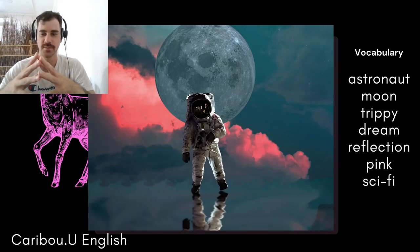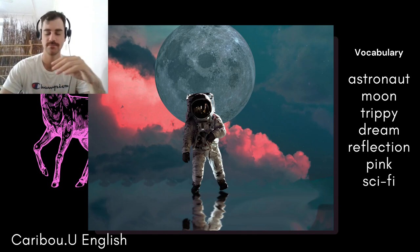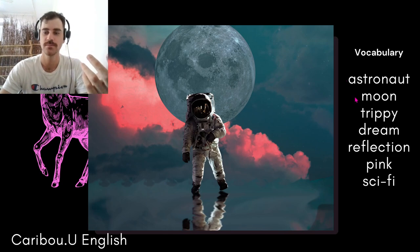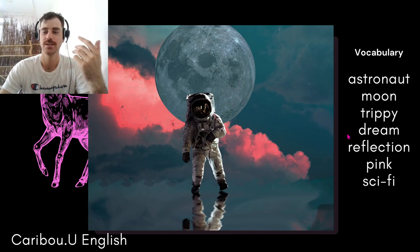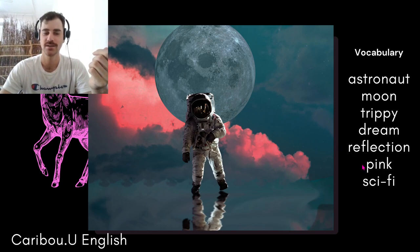Here's the first picture. The vocabulary is on the right. First is: astronaut, moon, trippy, dream, reflection, pink, sci-fi.